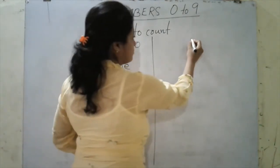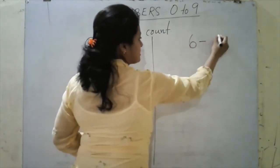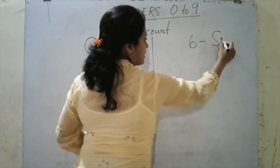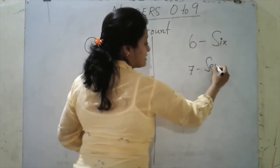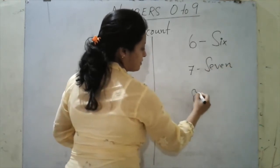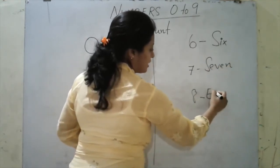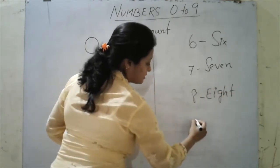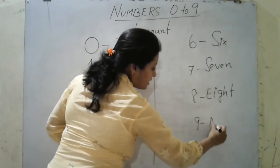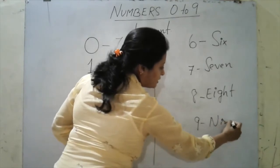After that, we have got six. S-I-X, six. Seven. S-E-V-E-N. Seven. Eight. E-I-G-H-T. Eight. Nine. N-I-N-E. Nine.